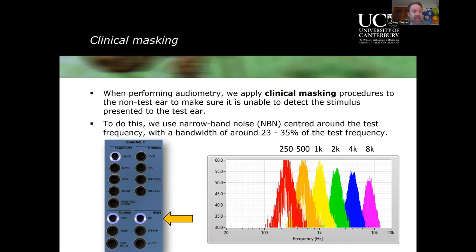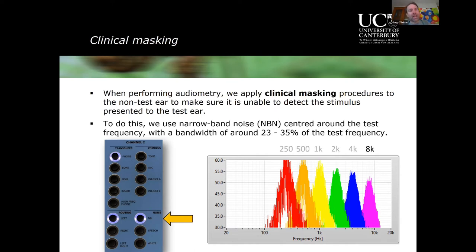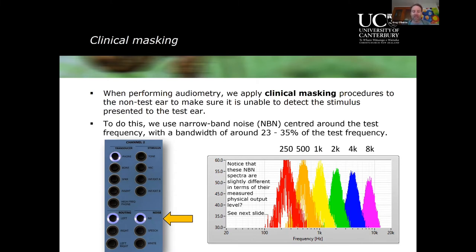The levels of the narrow band noises differ across frequencies, but we don't care about the absolute physical level. What matters is how we calibrate it — in terms of effective masking level (EM). This is stated in terms of how much masking noise is needed to lift someone's threshold to a certain value, expressed in dB EM (decibels of effective masking). It tells us the dB HL level on the audiogram that a masker will shift someone's threshold to when we present that noise.